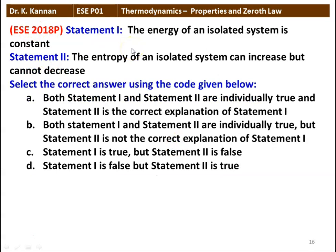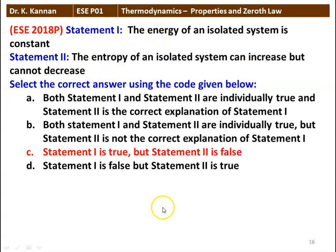Next question, again two statements. Statement 1: the energy of an isolated system is constant. Statement 2: the entropy of an isolated system can increase but cannot decrease. The answer: statement 1 is true. Statement 2 — entropy of an isolated system can increase but cannot decrease — this is not the correct statement according to the answer given. The correct answer is statement 1 is true and statement 2 is false.